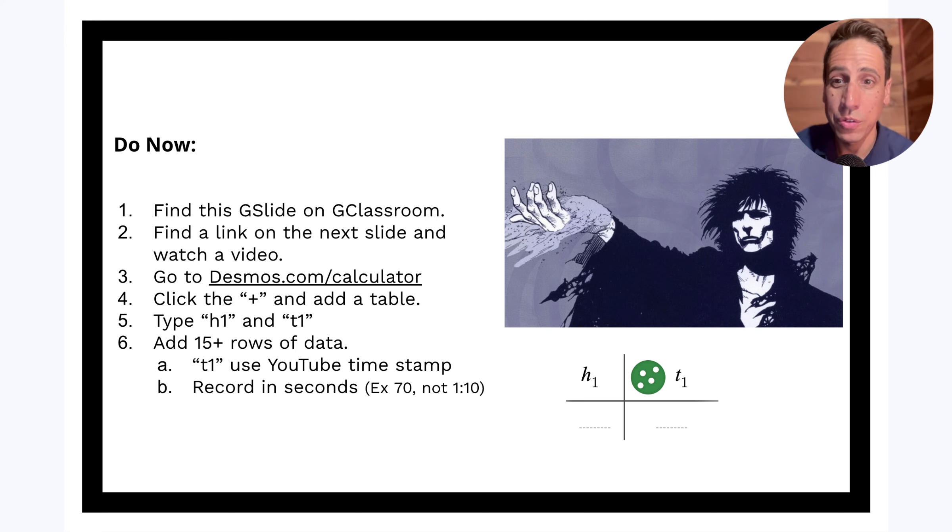I want you to use T1, when you're typing in T1, just directly use the YouTube timestamp. No need to adjust for the fact that the sand starts pouring 10 or 15 seconds into the video. That's fine. No need to adjust for the idea that the photos were superimposed. You can just actually use the YouTube timestamp directly. When you do it, record it in seconds.